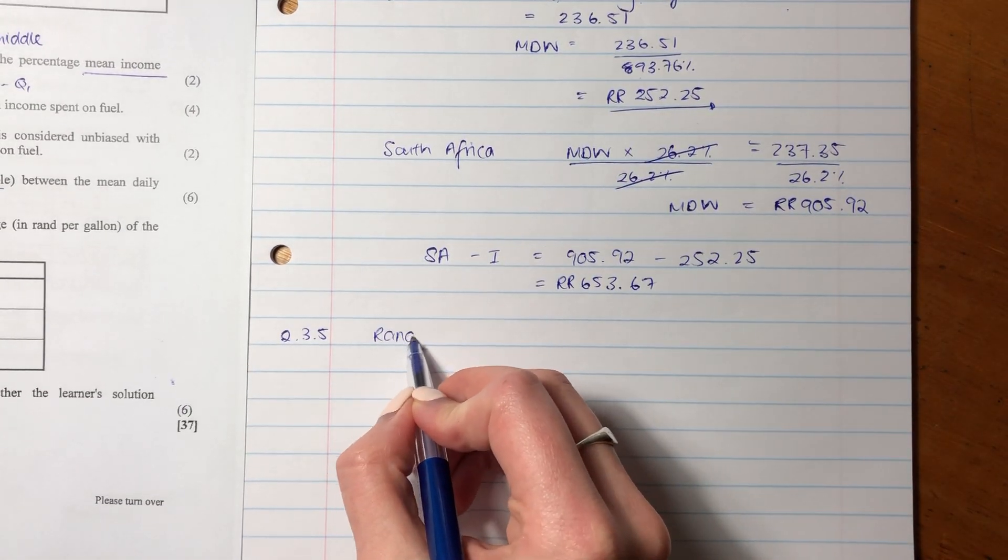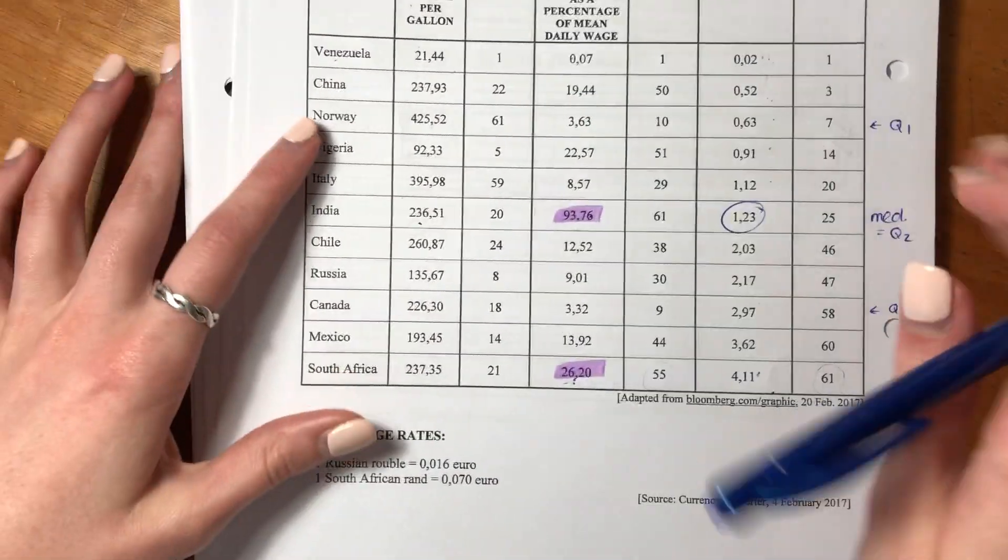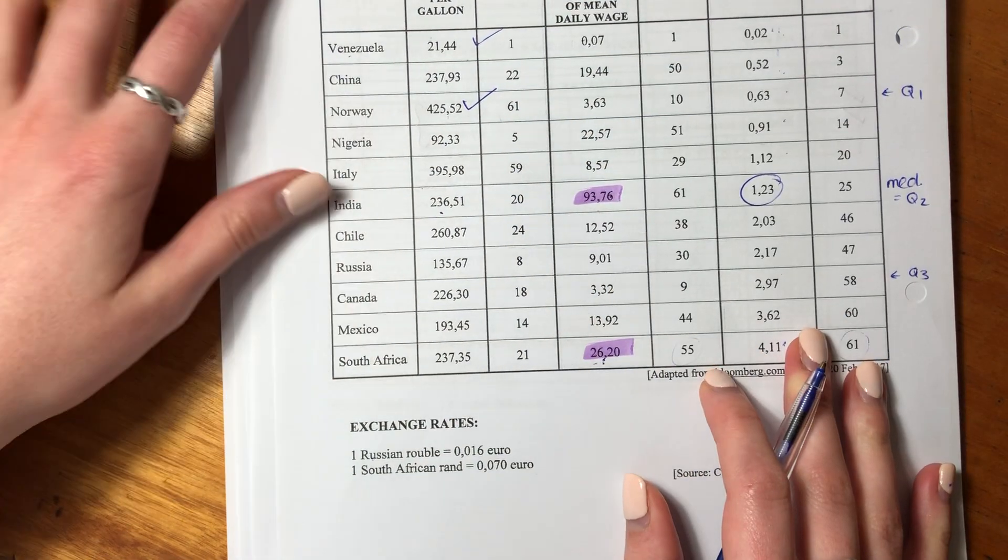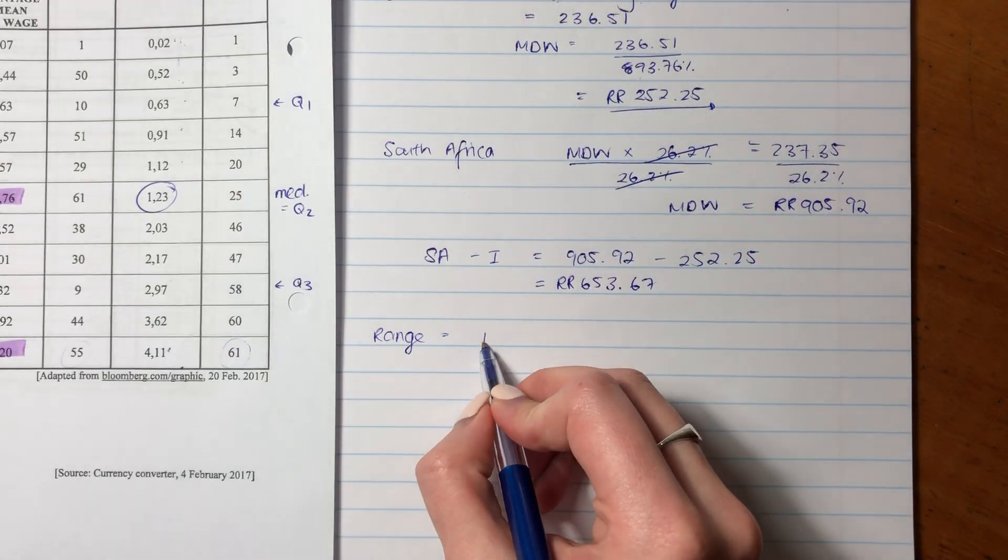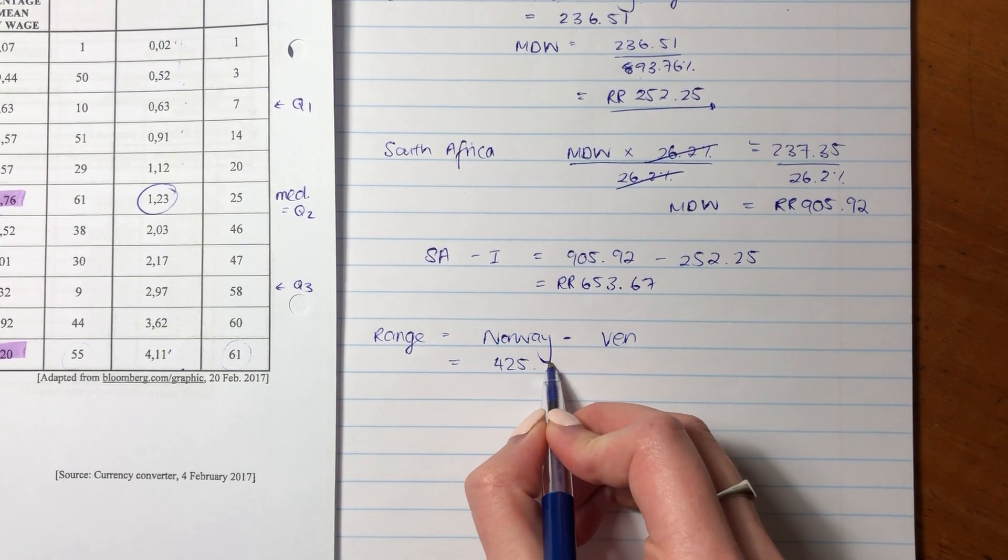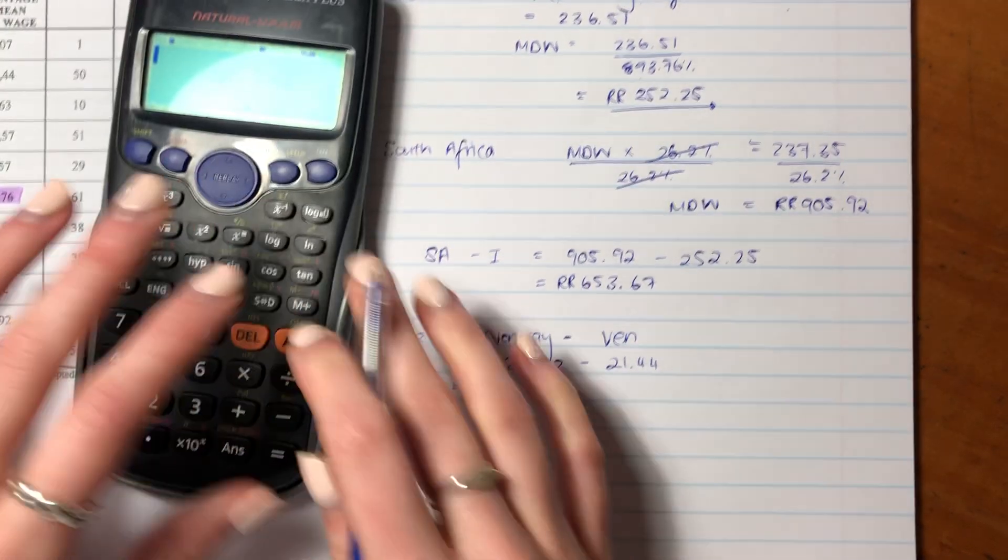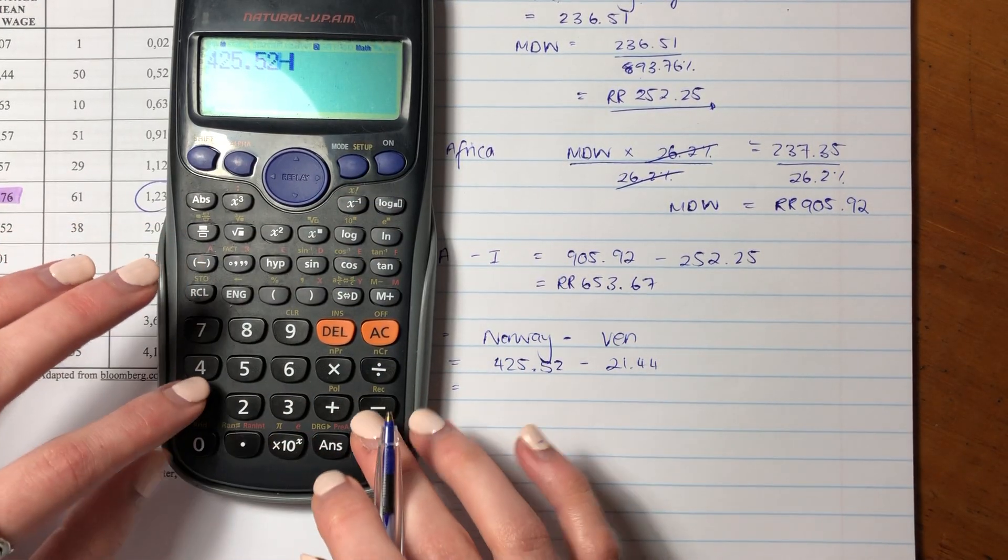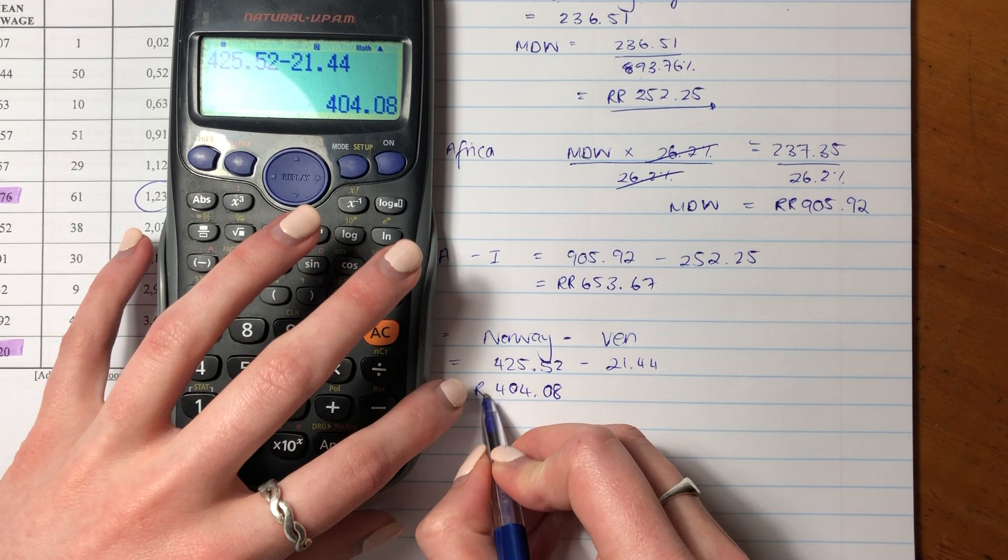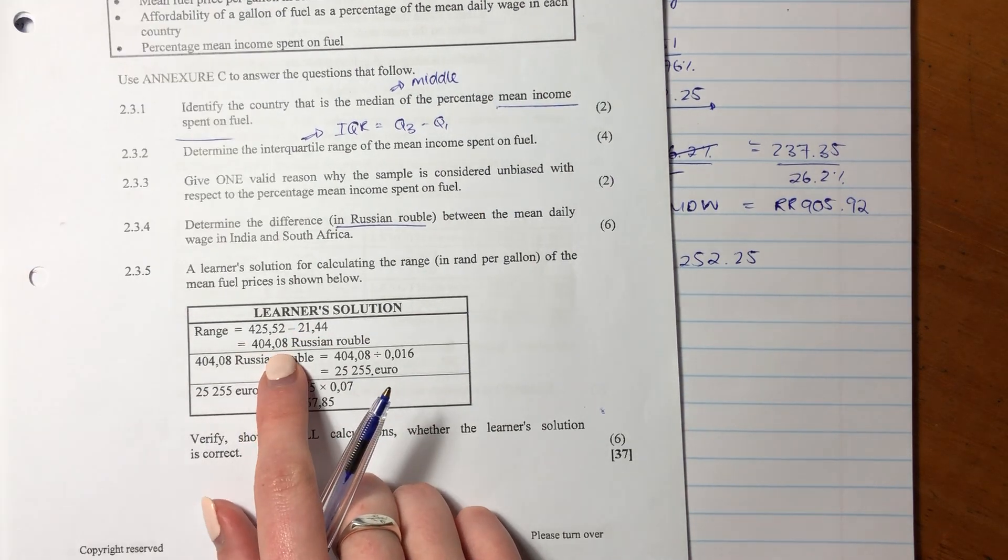So firstly, let's find the range. So we are looking at the mean fuel price. So we're sitting here. So the range is the largest minus the smallest. So I see Norway as the largest, and I see Venezuela as the smallest. So let's put that in. So we're going to say Norway minus Venezuela. So we're going to say 425.52 minus 21.44. So let's put that into our calculator, and I get the range as 404.08 Russian ruble. Let's see if we're agreeing with the students so far. So, so far, we agree with them, because they got the same range as we got.